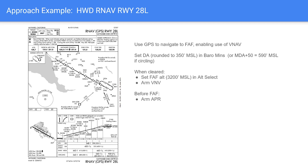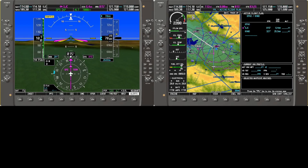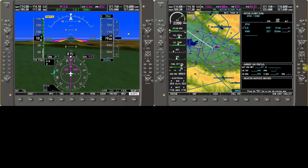As we approach the final approach fix, we'll arm approach mode — that's when we start seeing approach guidance. We'll press the approach button and let the autopilot join. Once the glide path is captured — somewhere between WESH and SUJ — we'll set the missed approach altitude in alt-select, since the autopilot ignores alt-select once glide path is captured. Here we are in the G1000 simulator with a simple flight plan from Palo Alto to Hayward, level at 7,000 direct to San Jose.